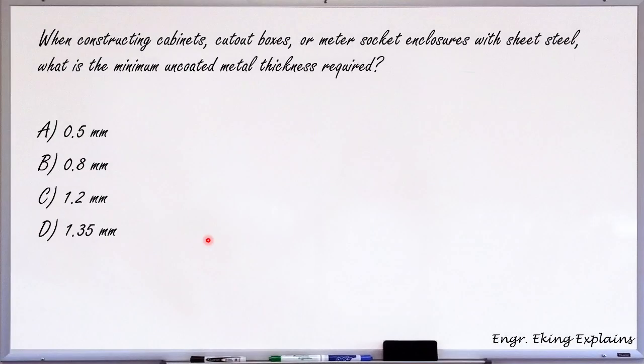when constructing cabinets, cut out boxes or metal sockets in closures with sheet steel, what is the minimum uncoated metal thickness required?